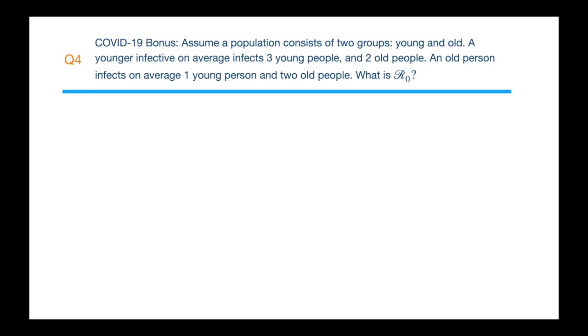A young person infects on average three young people and two old people. An old person on average infects one young person and two old people. And we have been asked to calculate the R number.